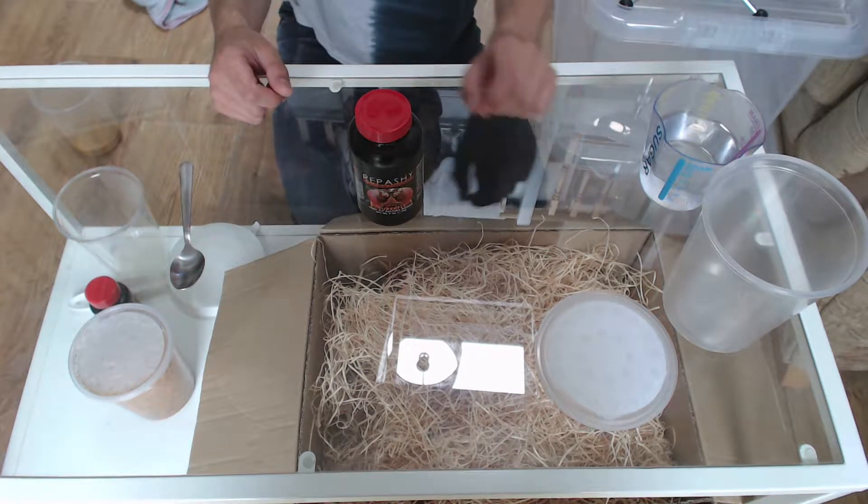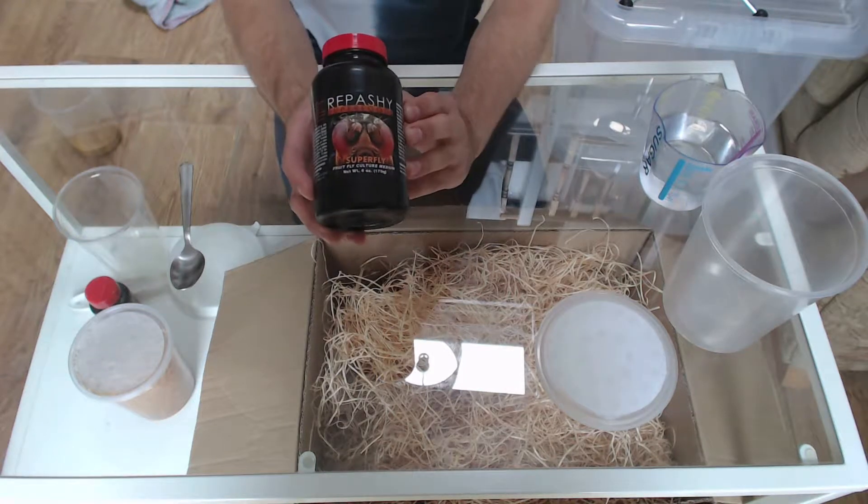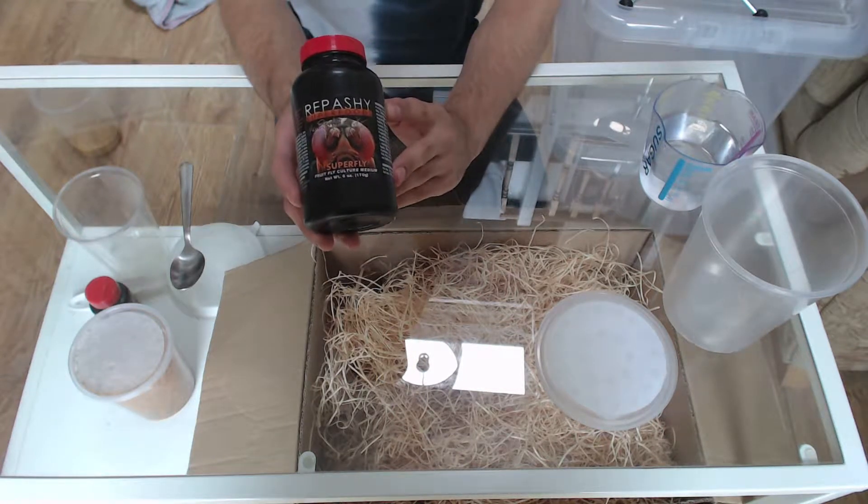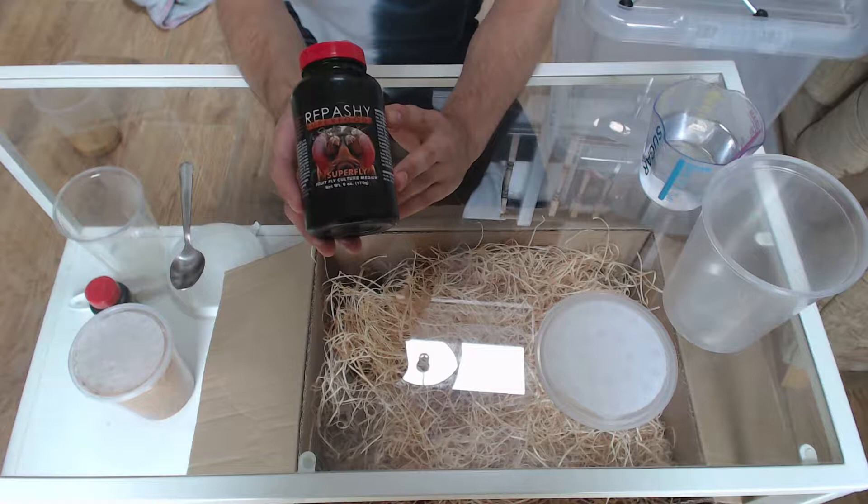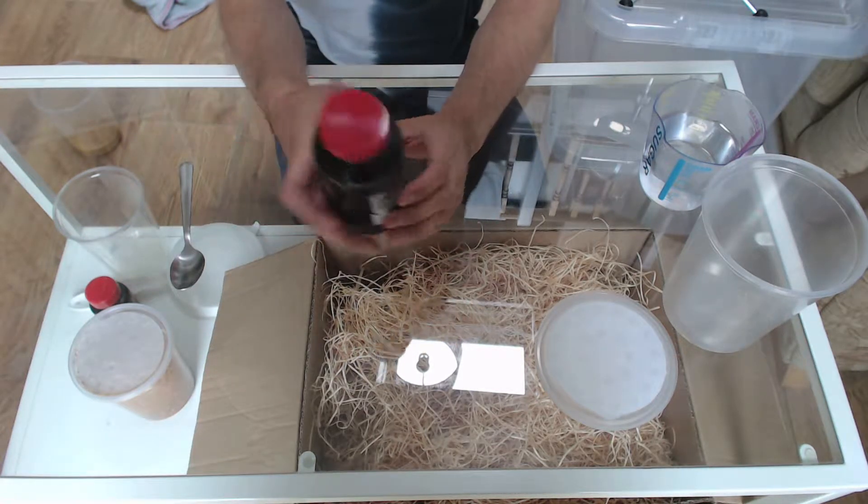There's a few bits you'll need to start with. Some sort of culture media. I use Rapashi Superfly. It's very easy to use and mixes well. It doesn't smell that much after you've had a culture running for a while, so that's why I use that.